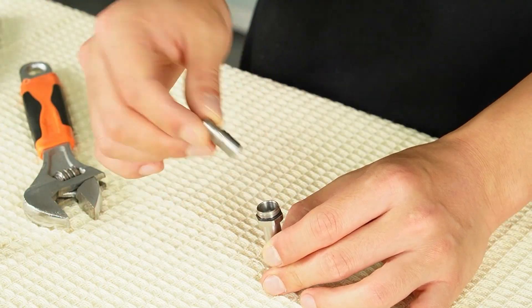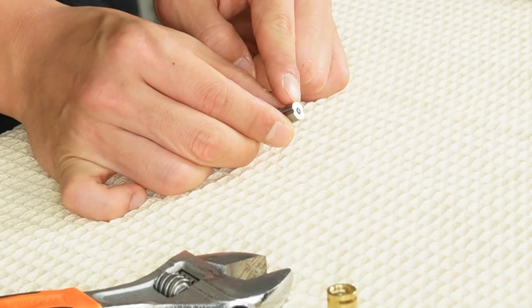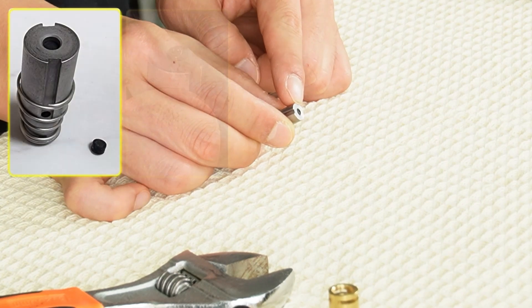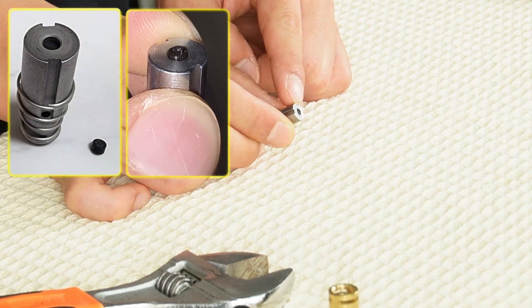Take out the plunger and spring and inspect the rubber tip at the bottom. If the rubber is missing or damaged, the valve won't function correctly.